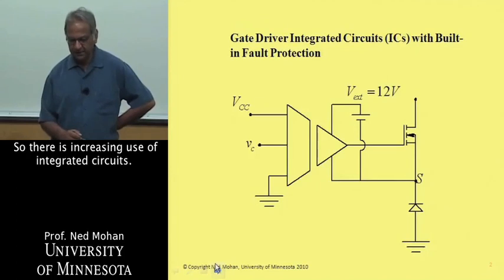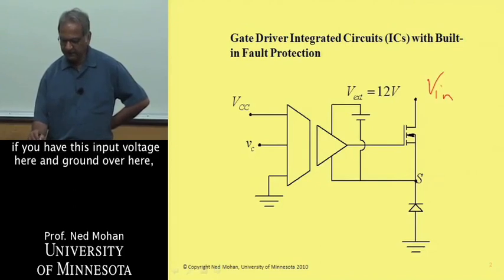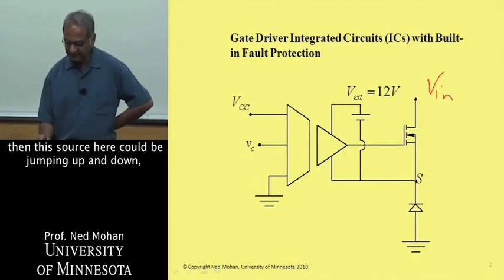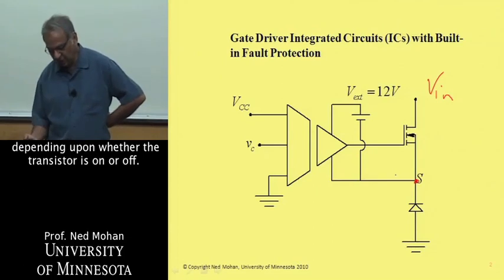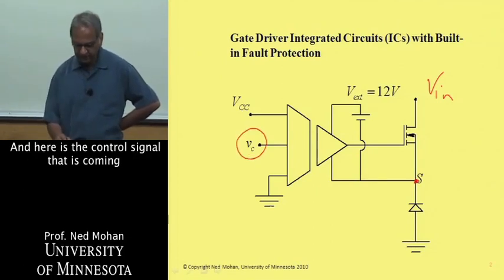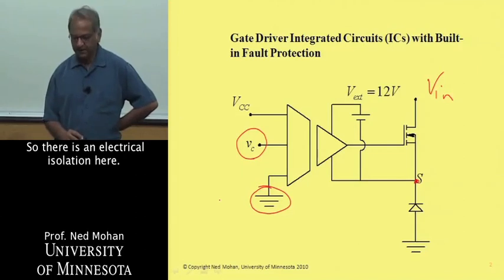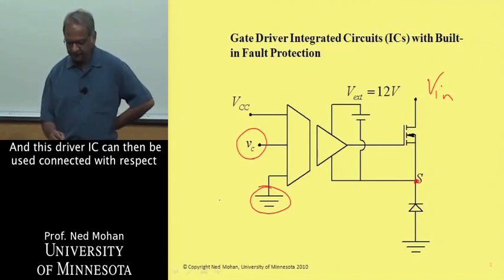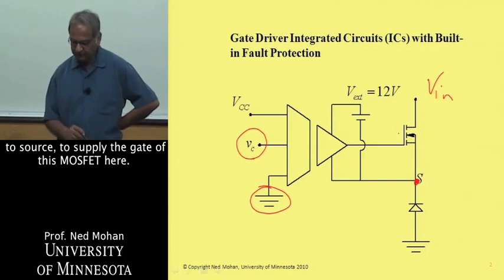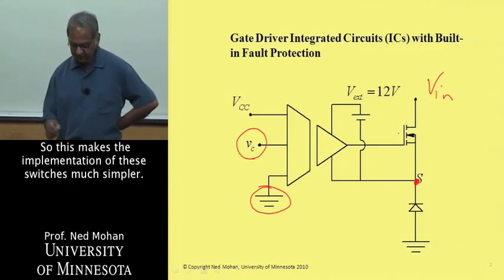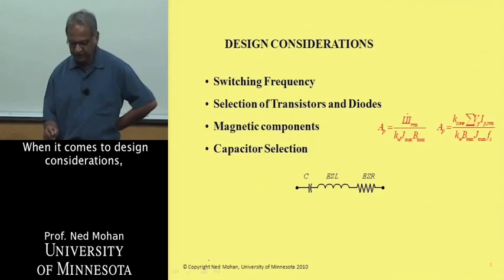There is increasing use of integrated circuits. For example, this slide is showing that if you have the input voltage here and ground over here, then this source here could be jumping up and down depending upon whether the transistor is on or off. Here's the control signal coming with respect to this ground, so there is electrical isolation here. This driver IC can then be used, connected with respect to source, to supply the gate of this MOSFET here. This makes the implementation of these switches much simpler.